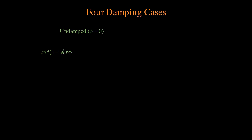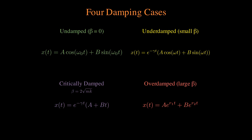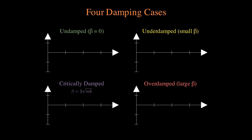We split this into four main damping cases: no friction, a little friction, the perfect amount of friction, or too much friction. Once friction is involved, there is a decaying term at the front — the spring will stop over time. But once we have too much friction, there's no longer a sine or cosine; the spring just doesn't move back and forth anymore. We can see a nice visualization of this as well.